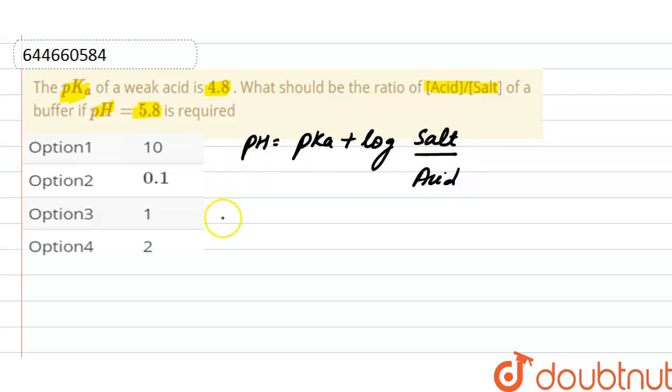Putting the values here: pH is 5.8, pKa is 4.8 plus log of salt divided by acid. So from here...